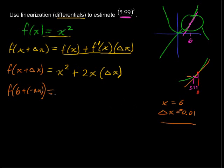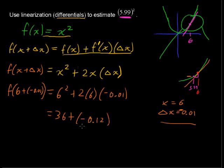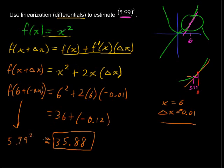So x squared, 6 squared plus 2 times 6 times negative 0.01 equals 36 plus 12 times negative 0.01 equals 36 minus 0.12 equals 35.88. So I'll put approximately equal to. What we've done here is we've estimated 5.99 squared to be approximately equal to 35.88 using linearization and thereby using differentials.